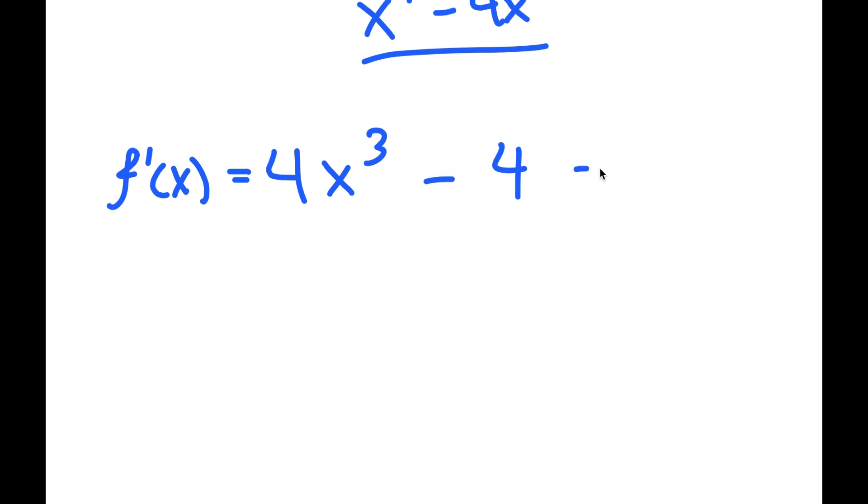And what I'm going to do is I'm going to set this equal to 0. So from here I can factor out 4, so I get 4 times x to the power of 3 minus 1 equals 0.